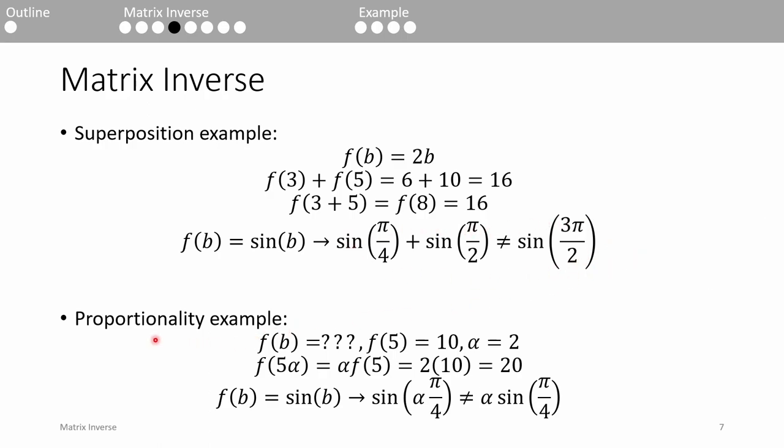Here's an example of proportionality. Now let's say we don't actually know what the function f of b is, but we do know that f of 5 equals 10, and there's a scaling factor, alpha equals 2.